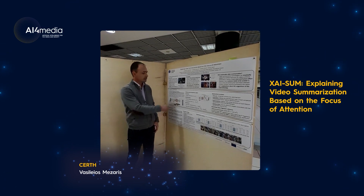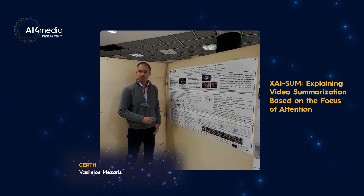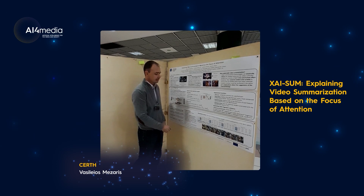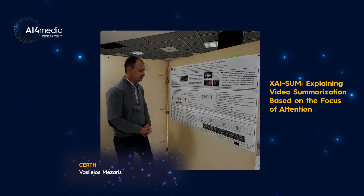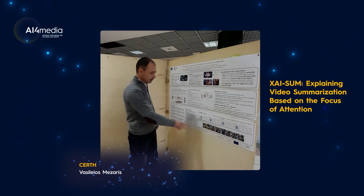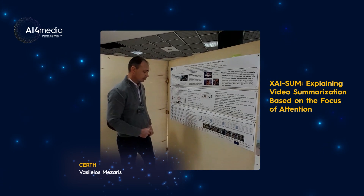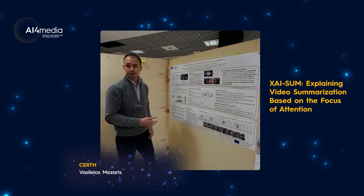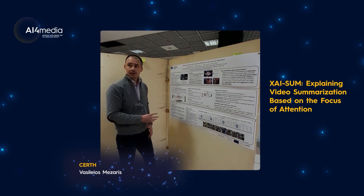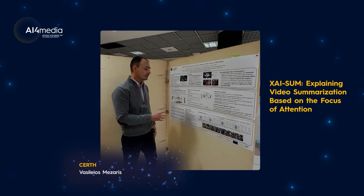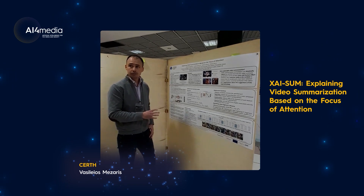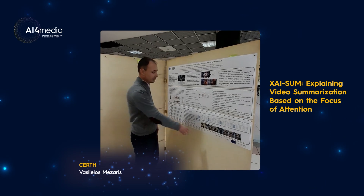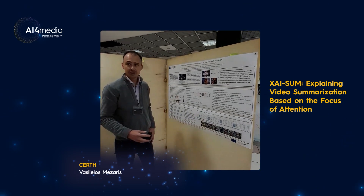It turns out that some of them are actually quite good explanations. We can see an example here, alongside the quantitative results, where we can see in the yellow boxes the results of the explanation — the most influential parts of the video that influenced the decisions of the summarizer network. And in blue, we can see the fragments that were actually included in the summary.